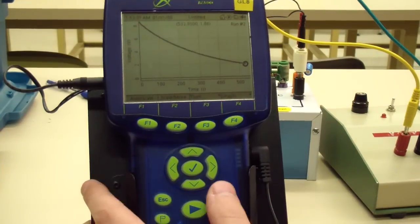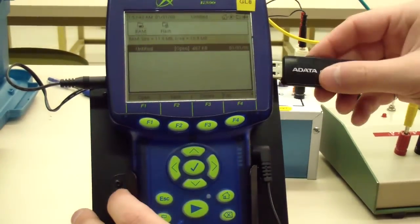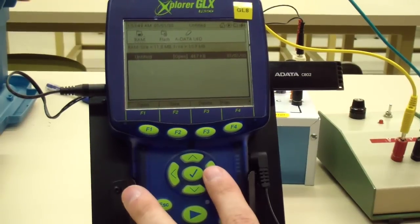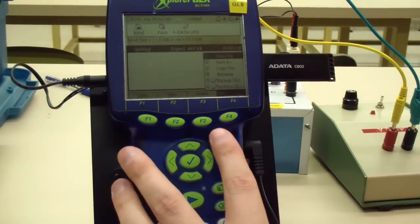To extract your data from the GLX, press home and then go to data files. Insert a USB drive and press left twice to return to the device's memory. Press down to select the current file.